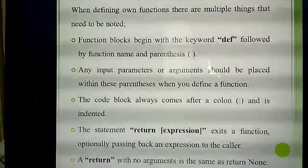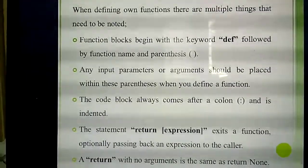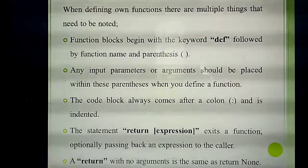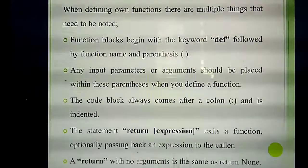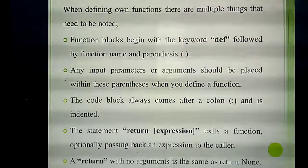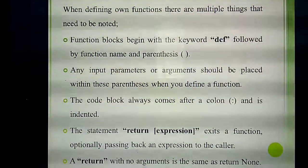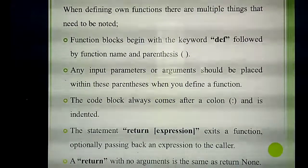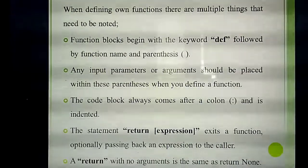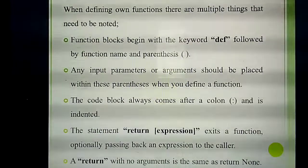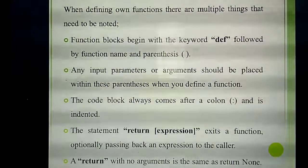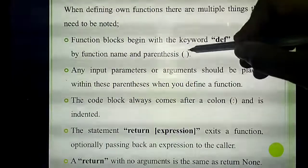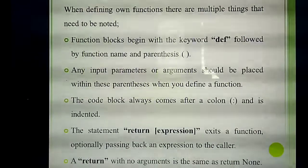Inside the parentheses, you give the input parameters or arguments — for example, a=5, b=10, or height (denoted as h), weight (denoted as w). All input parameters or arguments are placed inside the parentheses.